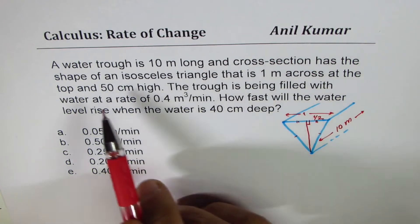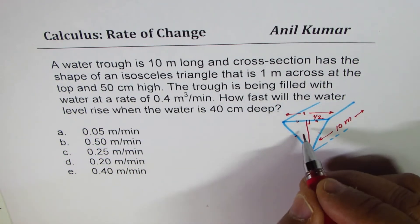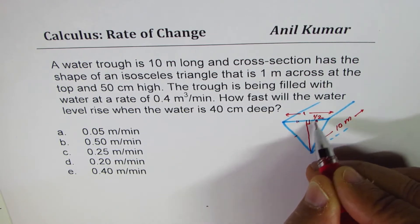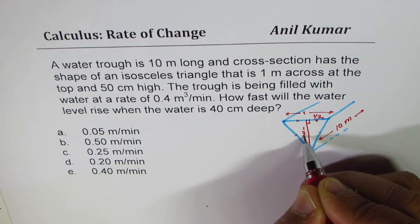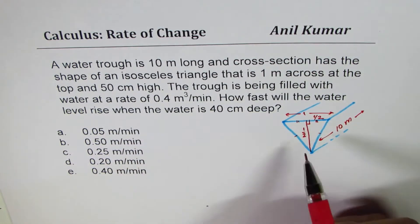At the top and 50 centimeter high. So this is also 50 centimeters also half when I wrote it in meters. Let me write this also as 0.5, which is half, right?